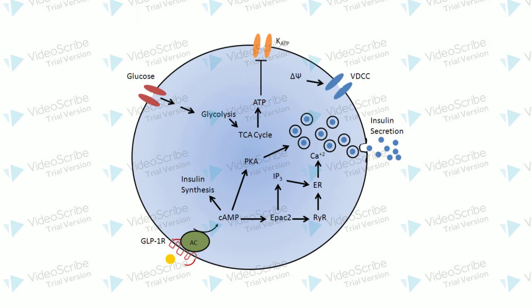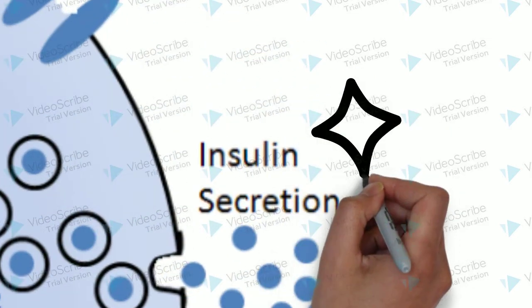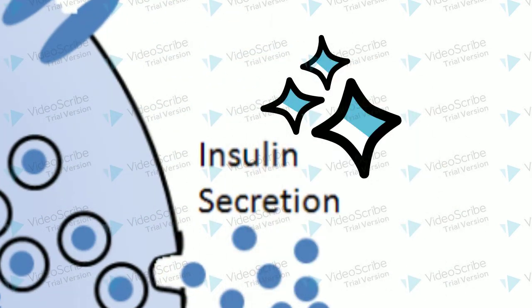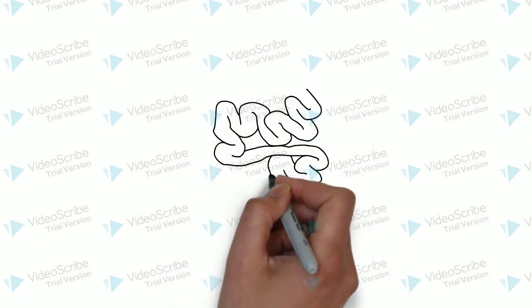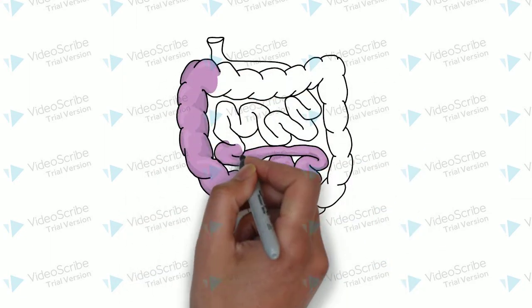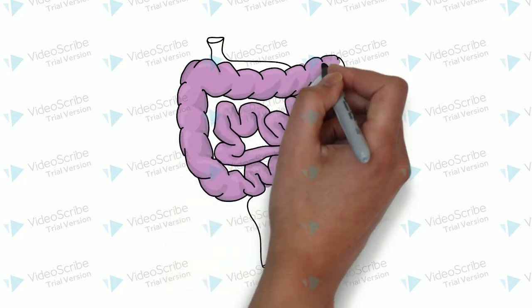One picture here is how GLP-1 receptor activation can lead to insulin secretion. Typically after ingestion of food, the small intestine produces the GLP-1 hormone.